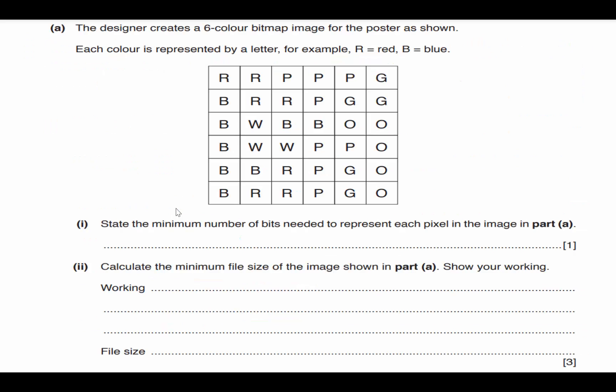All right, let's go ahead and move on. Let's take a look at another one. The designer creates a six color bitmap image. Right there, I see six, let's start calculating that bit depth. Two to the power of one is two, a bit depth of two gives me four colors, a bit depth of three gives me eight colors. The minimum number of bits needed to represent each pixel, three bits per pixel. Now that I know the bit depth, I can calculate the minimum file size.